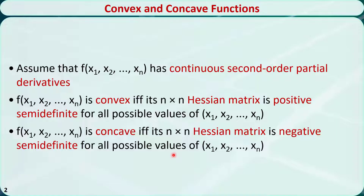What is the Hessian matrix? What is positive semi-definite? And what is negative semi-definite?